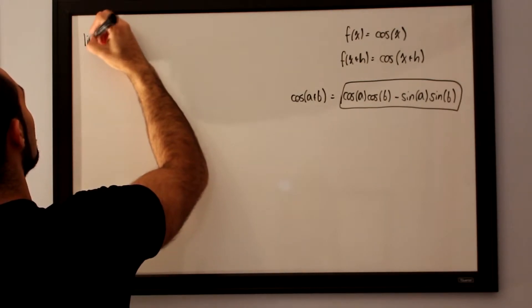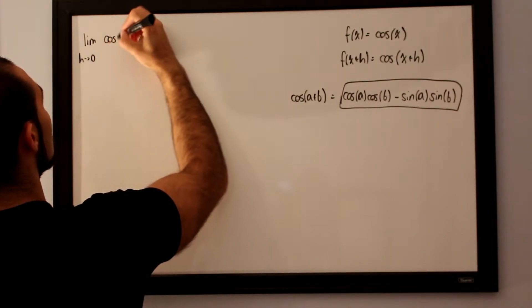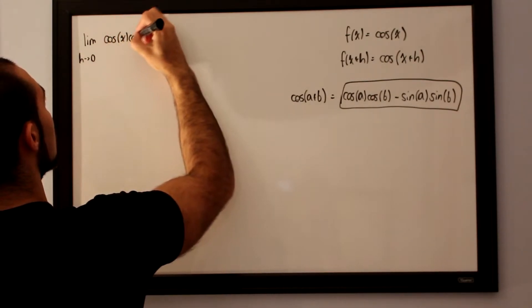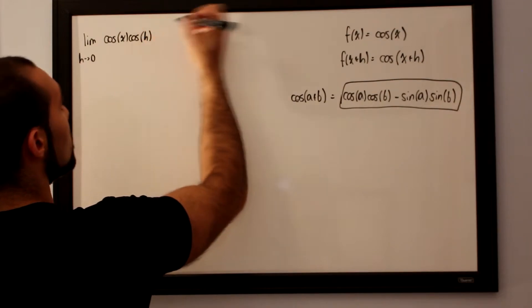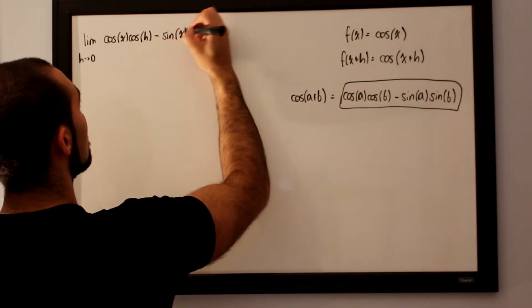Our f of x plus h will take the limit as h approaches 0 for cosine of x, cosine of h, minus sine of x, sine of h.